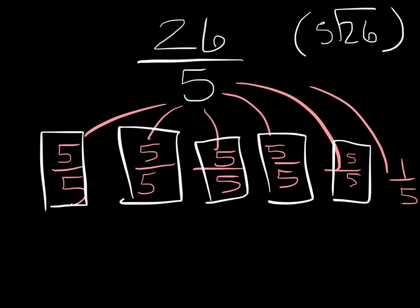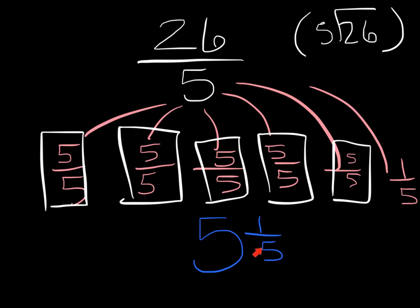Each 5 fifths is a whole — so that is 5 of them. But don't forget there was this little guy left over: 1 fifth. So 26 divided by 5 is 5 and a fifth. It's kind of like 5 with 1 left over, and that 1 left over is out of 5ths. If it was a cake cut into 5ths, there's 1 piece left out of 5.